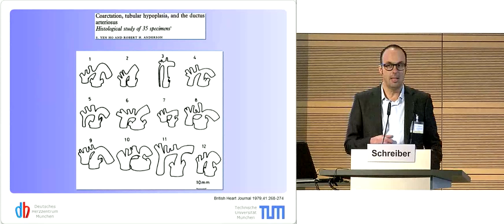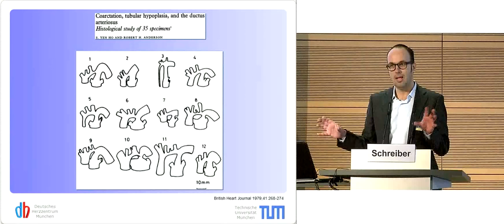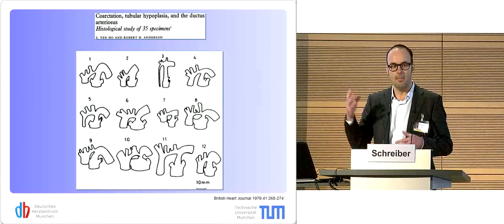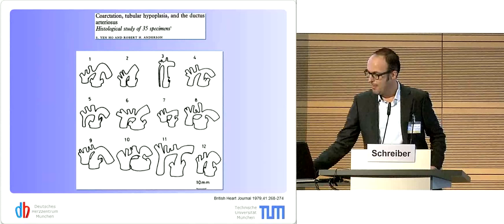Unfortunately Bob Anderson is not here, but I dug this paper out. The arch or the discontinuity can have a wide spectrum. The head vessels can come off at different areas, and the arch can be long and narrow, and so on.